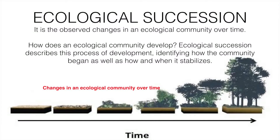Ecological succession means the different stages of change observed in an ecological community over time. For example, there was a clean land, then there are seeds, then they start growing, and finally they become a complete forest. Ecological succession describes the process of development, identifying how the community begins as well as how and when it stabilizes.